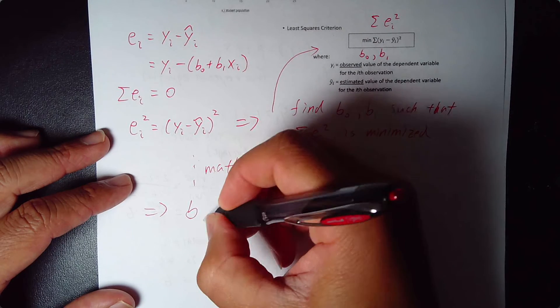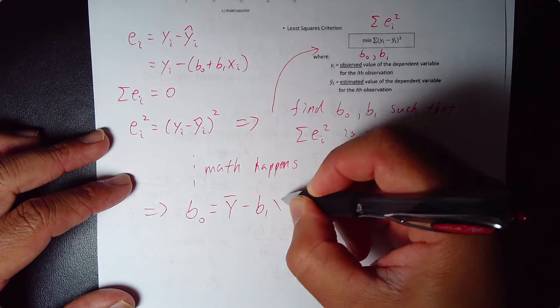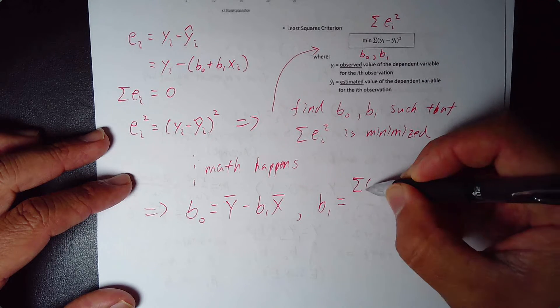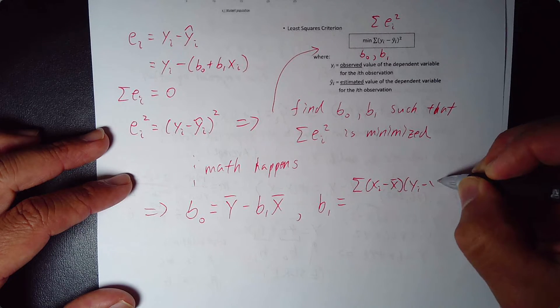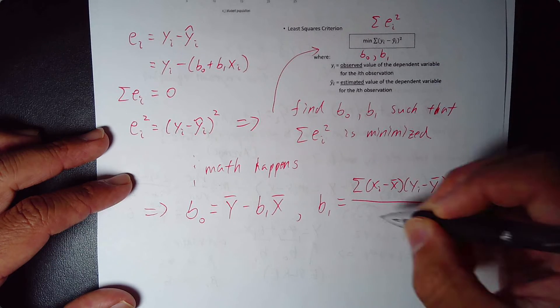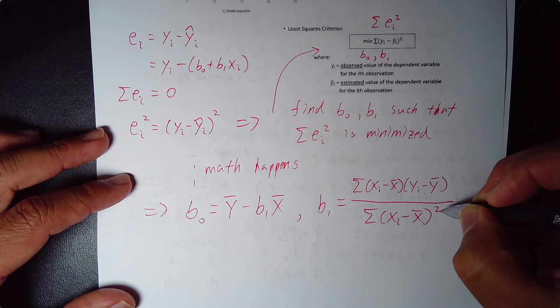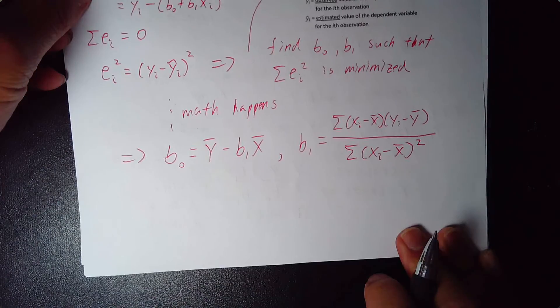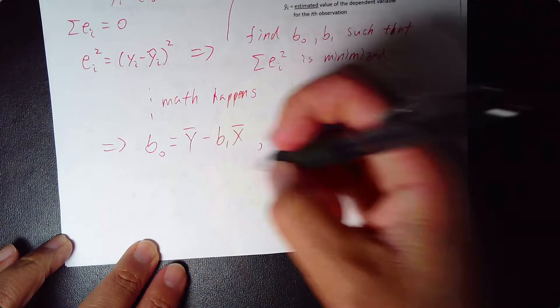Which is b0 equals y bar minus b1 x bar, and b1 will equal summation xi minus x bar times yi minus y bar all over summation xi minus x bar squared. And these are what we call the least squared estimates, or the least squared estimators for beta 0 and beta 1.